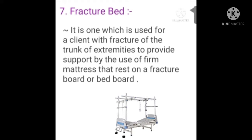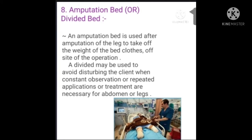The fracture bed provides support by the use of a firm mattress that rests on a fracture board or bed board. The fracture bed is made the same as an open bed with the addition of fracture boards. Next: amputation bed or divided bed. The word amputation means the surgical removal of a limb or extremity such as an arm, leg, foot, hand, or fingers.